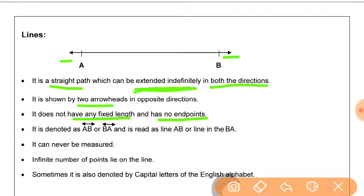It is denoted by AB with a symbol of line on top, or we can say BA with a symbol of line on top. Since it does not have any fixed length, it can never be measured.